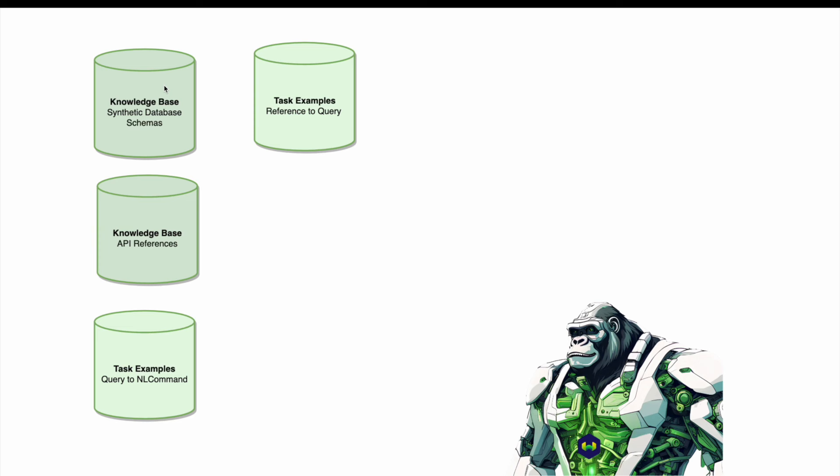Here's everything we did to train the Weaviate GraphQL Gorilla in a two-minute overview. We begin with four data sets. We have a knowledge base of synthetic database schemas. We gave GPT-4 a prompt on what a Weaviate database schema looks like, asking it to write at least two text properties, at least one integer number property, at least one Boolean property, and at least one cross-reference from one class to another. We create 50 such toy schemas, from cars to instruments to all sorts of things.